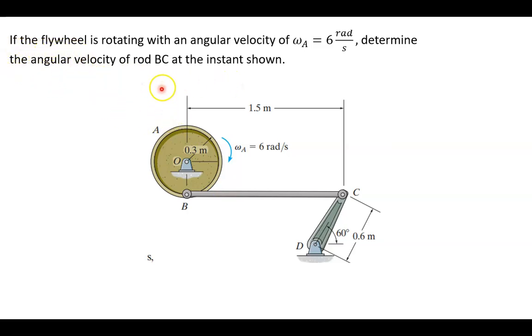If the flywheel is rotating at an angular velocity of 6 radians per second, determine the angular velocity of rod BC at the instant shown. We have a flywheel A connecting to rod BC, and a crankshaft CD which is anchored into place with only angular rotary motion. We've got a flywheel with rotary motion, and BC is connecting the two of them.